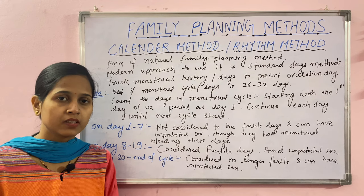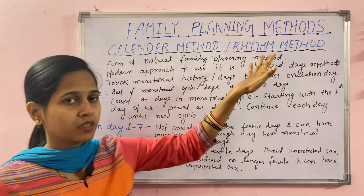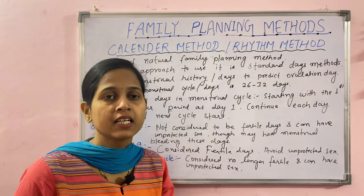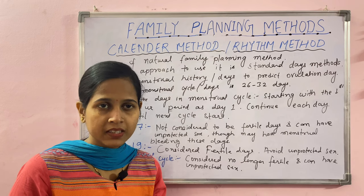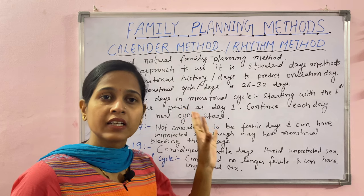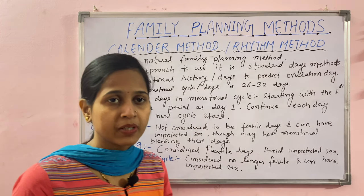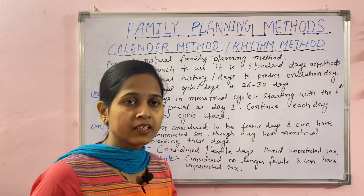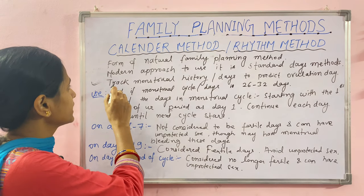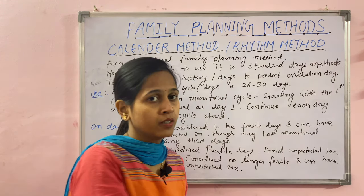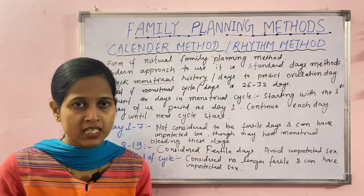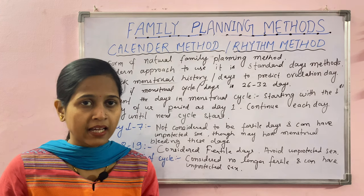The next method is the calendar method, also called the rhythm method. This is a form of natural family planning. The modern approach to this is called the standard days method. In this method, you track your menstrual history to predict your ovulation day. The normal menstrual cycle is based on 28 days.